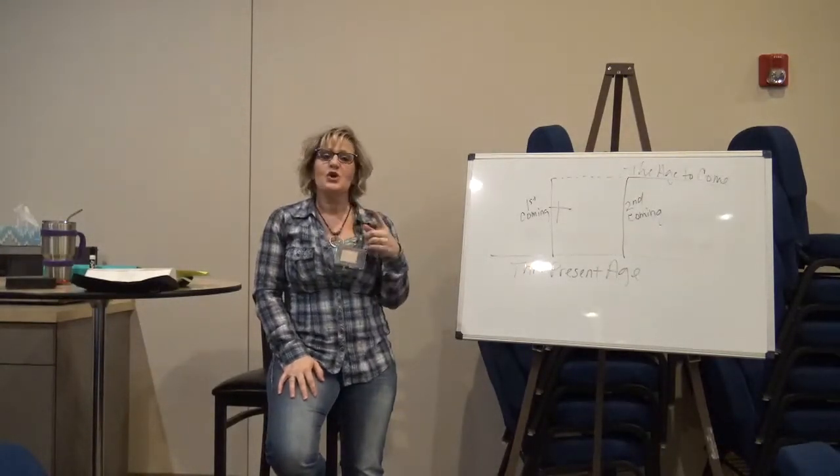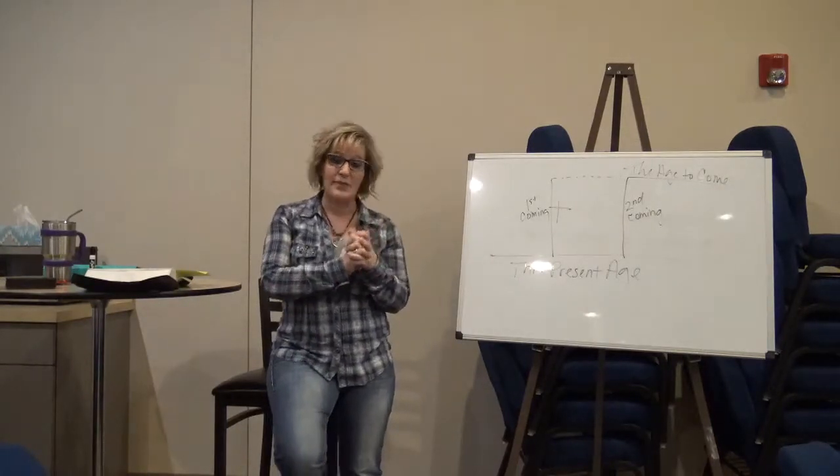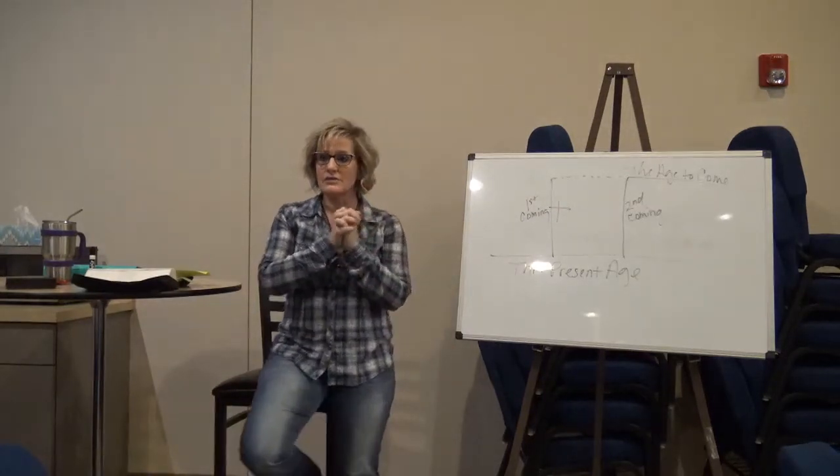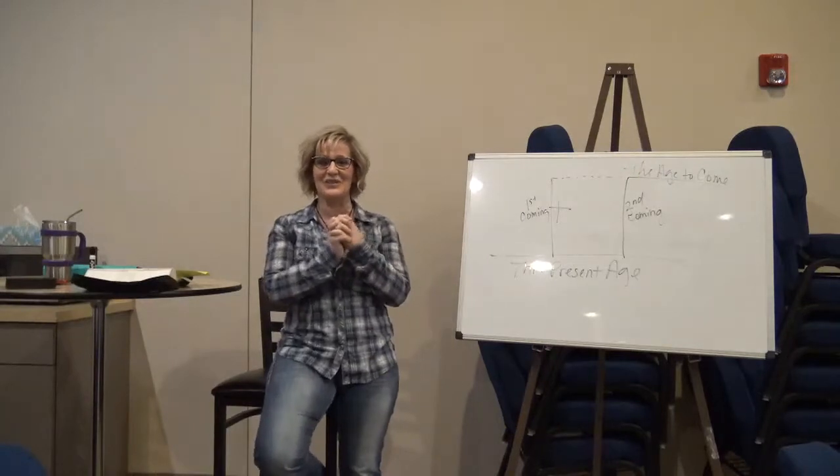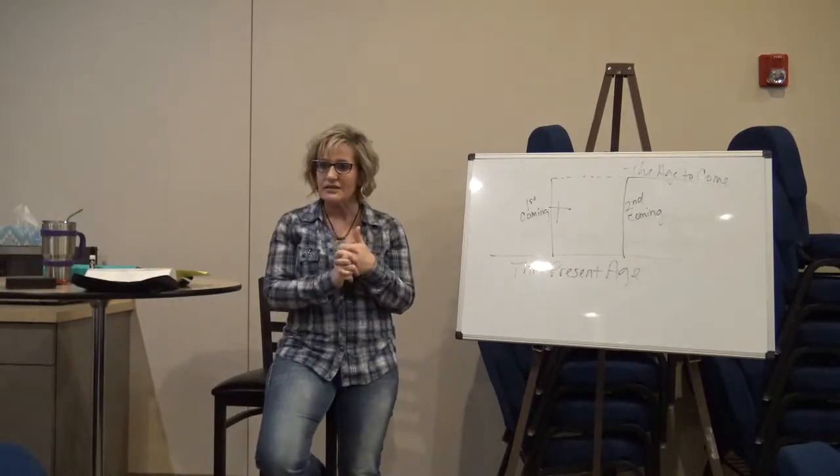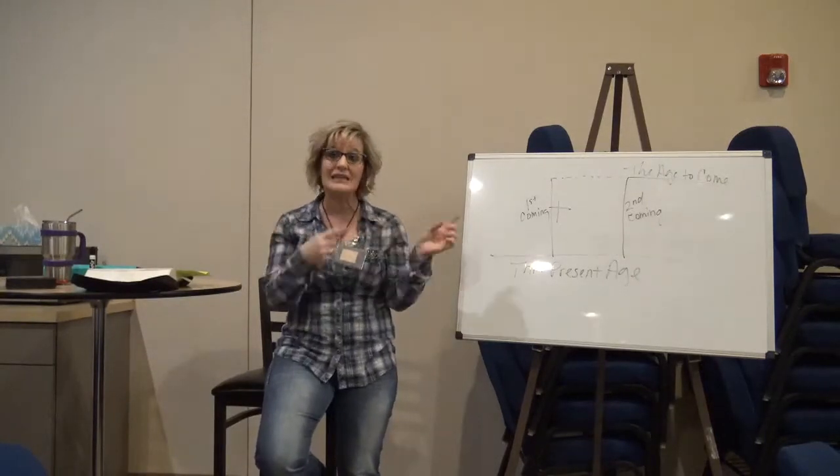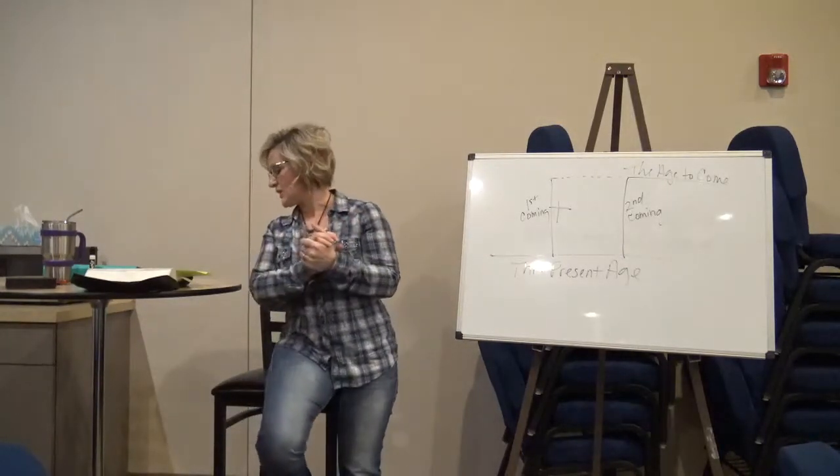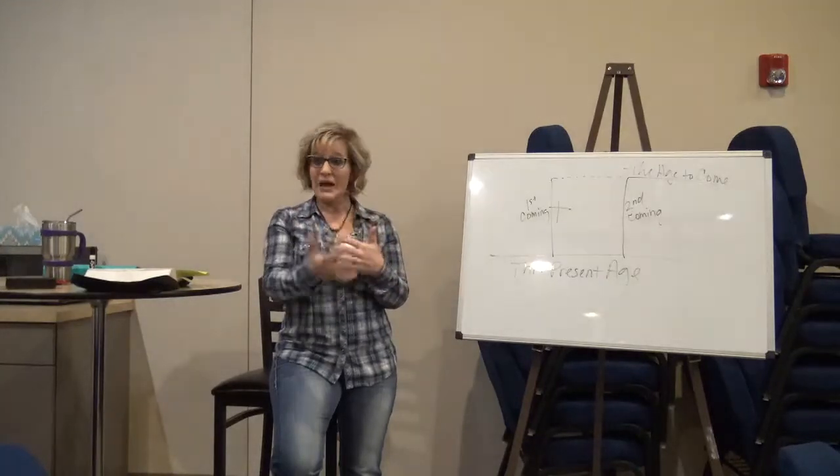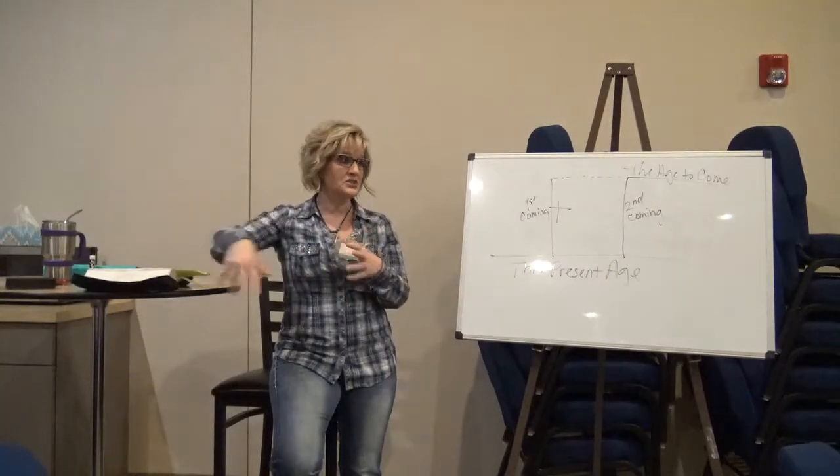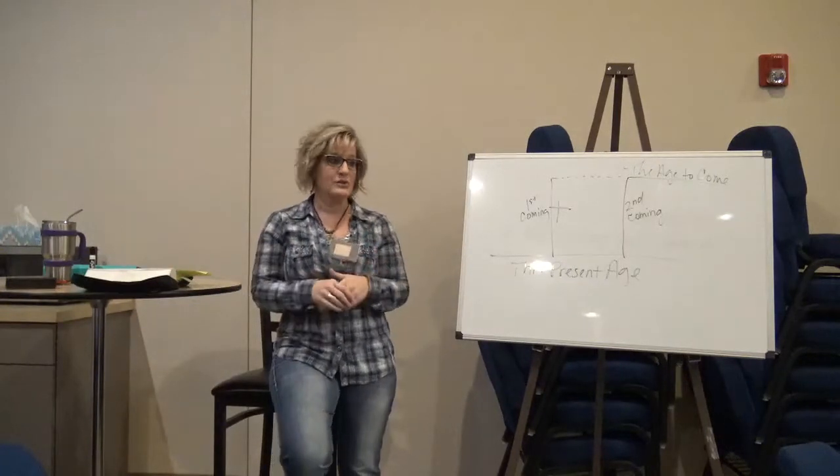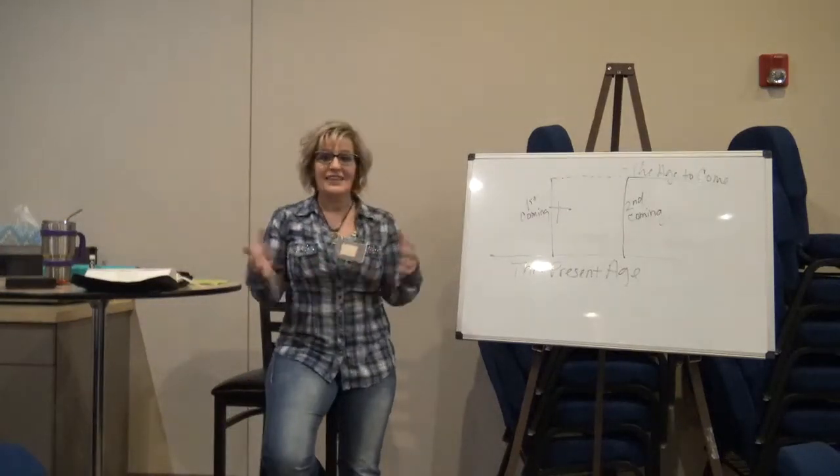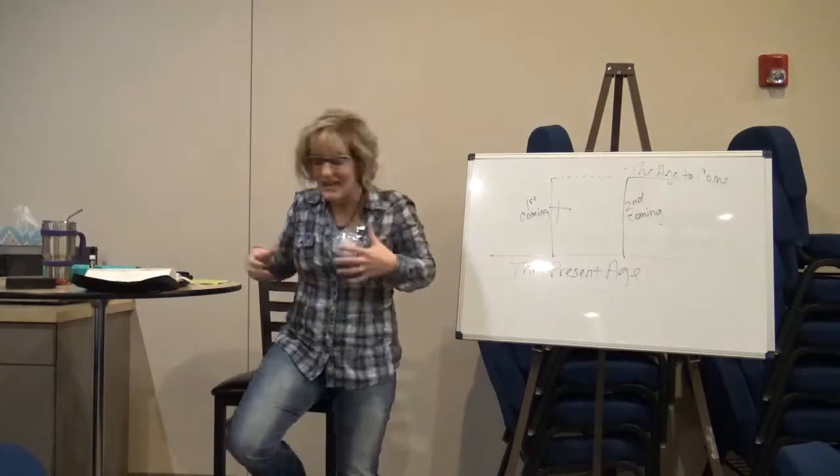So we're going to call this this present age. This is going to be the first coming of Christ. This is the second coming of Christ. And this is the age to come. So Jesus came here. And I just ask you, did he set up this earthly kingdom where he ruled and reigned? And that's why the Jews, many of the Jews, don't believe that he was the Messiah, because he did not come and set up a throne. He was from the line of David. Remember, the line of David was going to reign forever. Jesus was from the line of David. But he didn't come and set up this earthly kingdom like they all thought he was going to do.